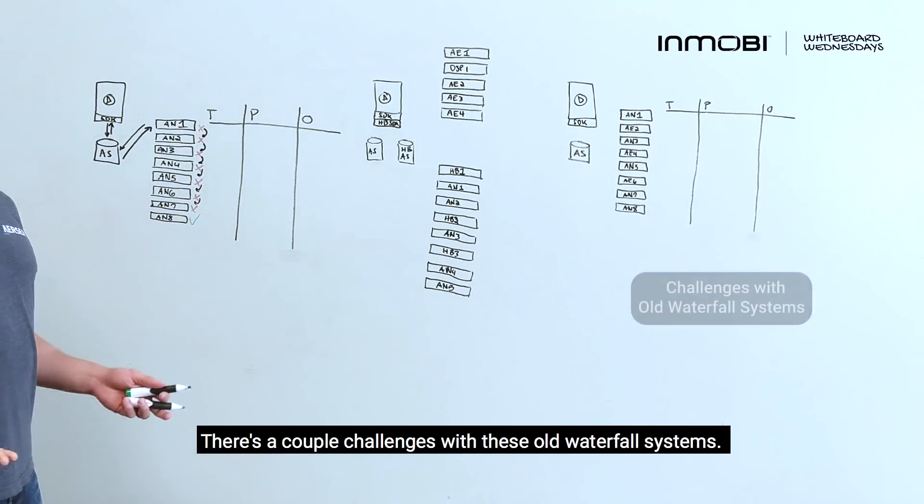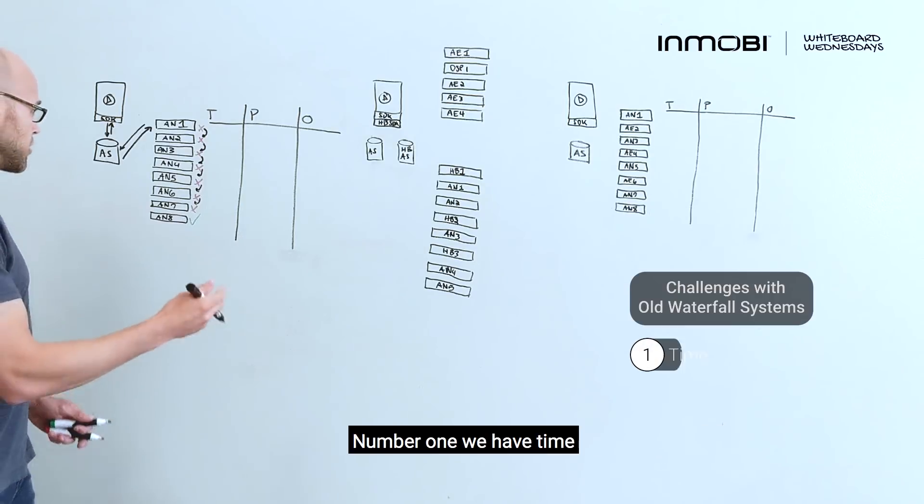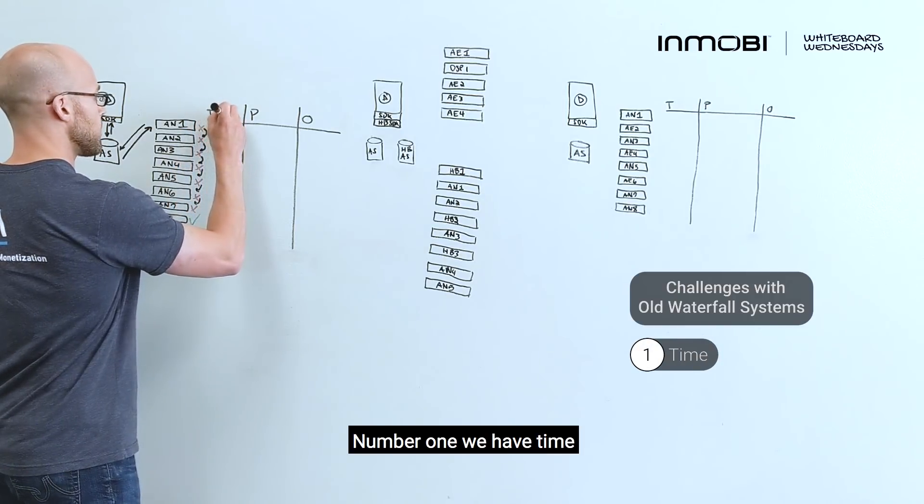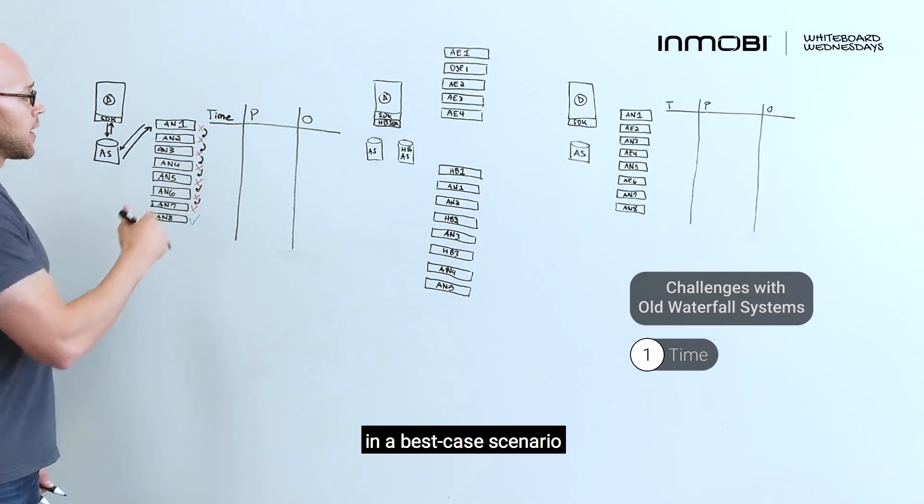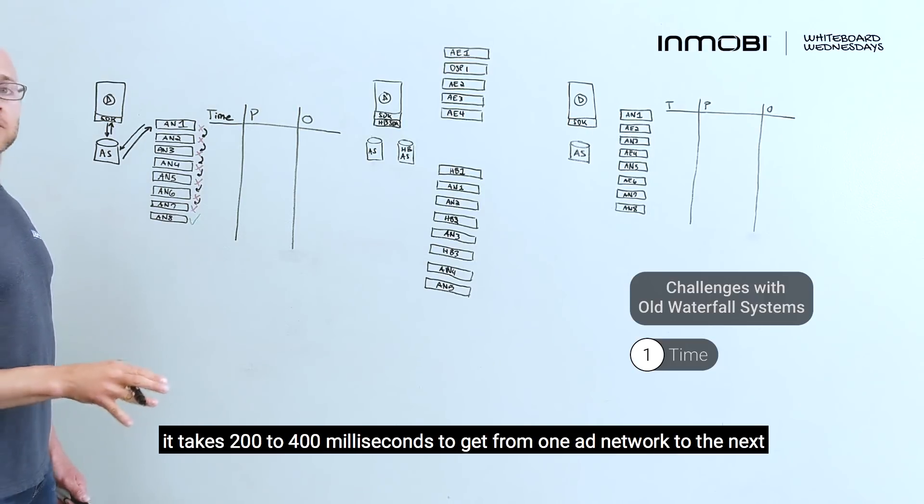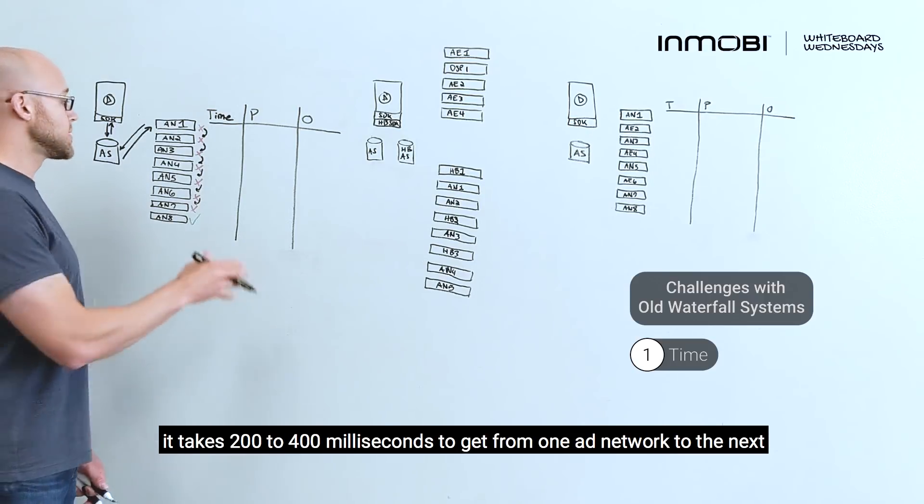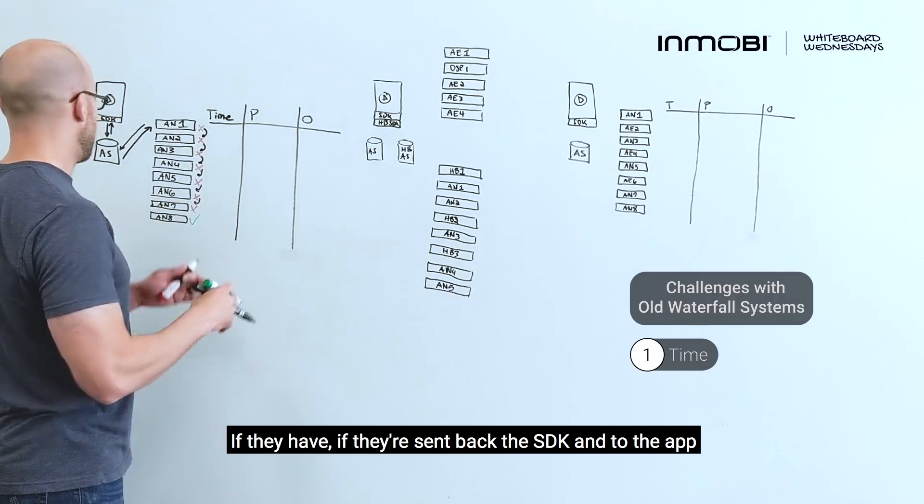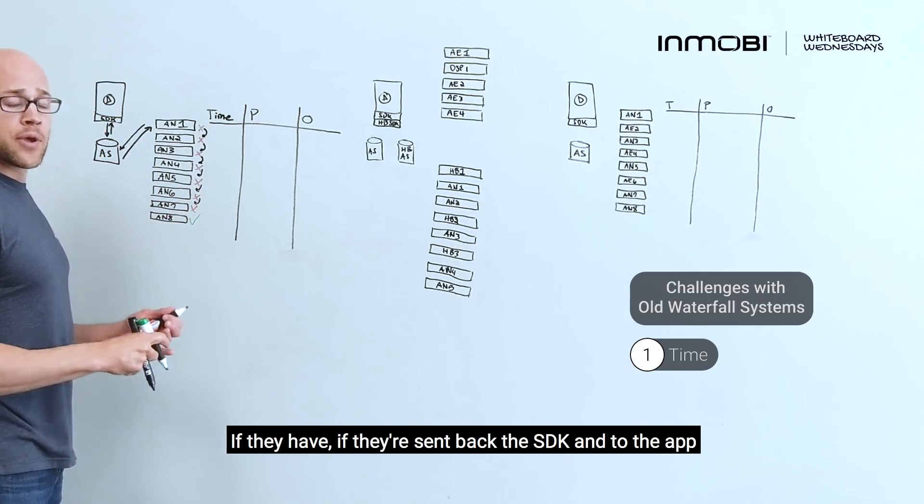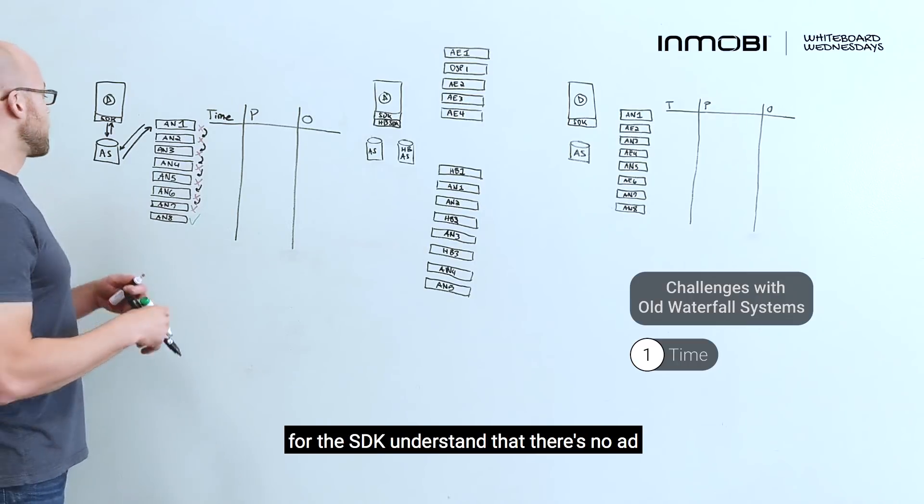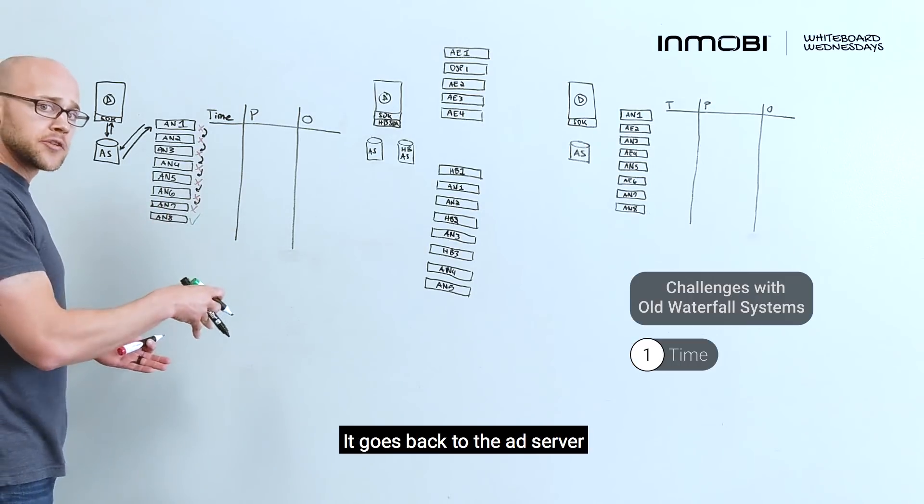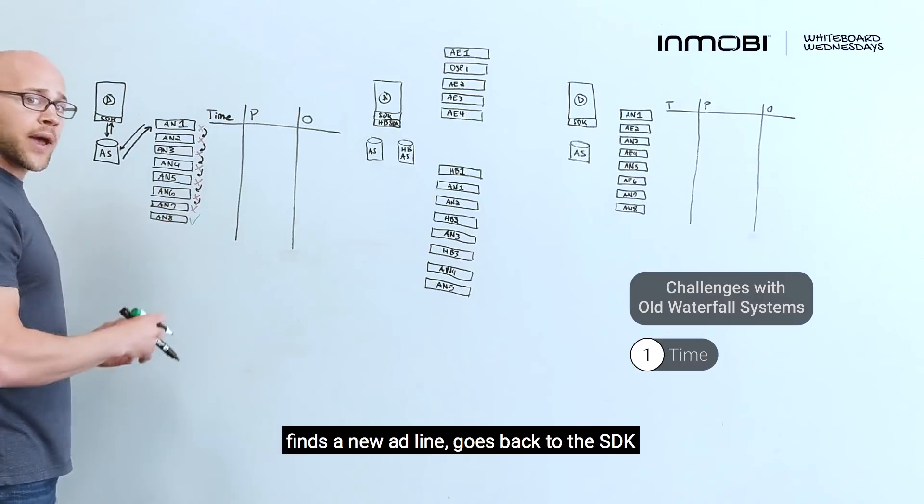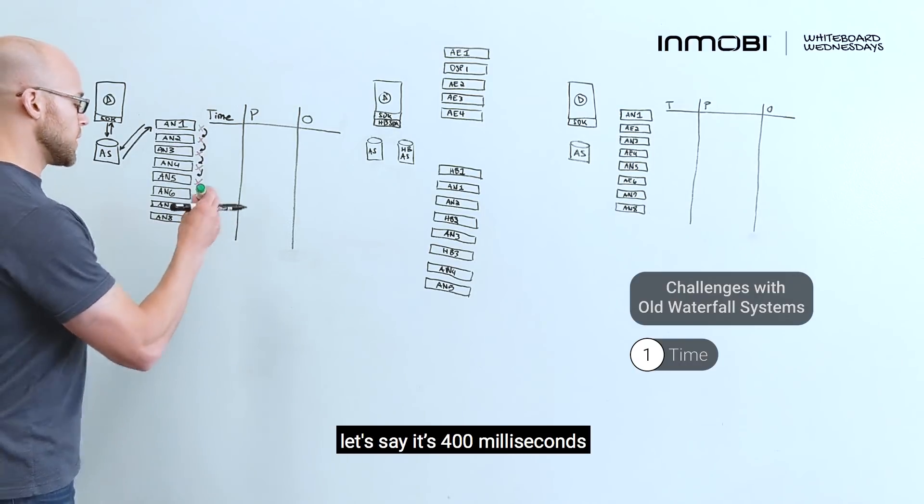There's a couple challenges with these old waterfall systems. Number one, we have time. So in a best case scenario, it takes 200 to 400 milliseconds to get from one ad network to the next. If they're sent back to the SDK into the app, they attempt to render the ad for the SDK to understand that there's no ad, it goes back to the ad server, finds a new ad line, goes back to the SDK.